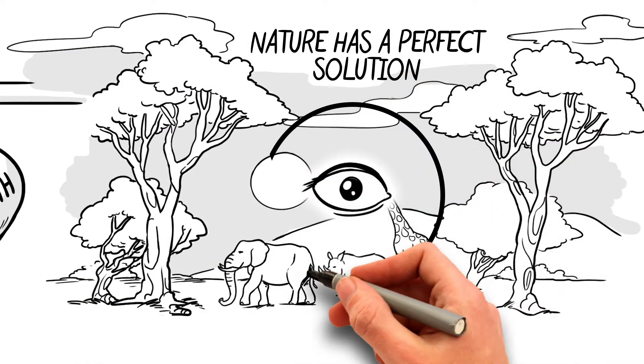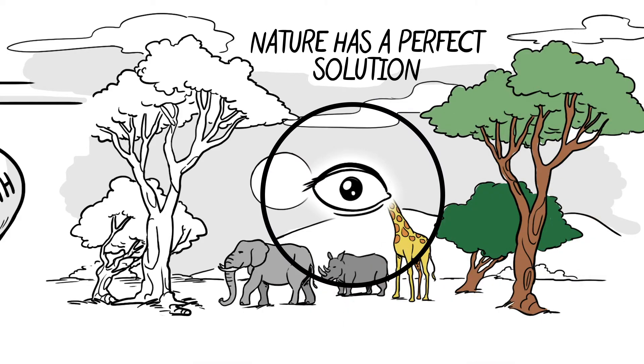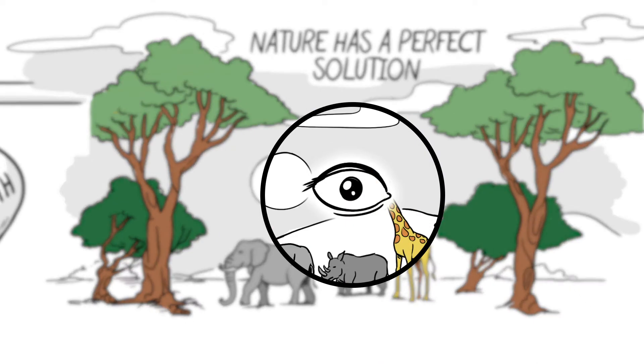Your eyes work like this. The direct focus is kept sharp. We call this fovea. Everything around is blurred.